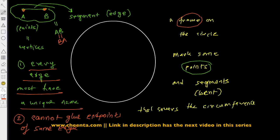So how can we frame edges with vertices on this circumference? I suggest that you pause the video and give it a try before looking at the solution. Assuming you have done that, let me give you the two wrong solutions that students often do.